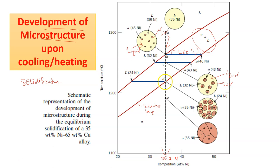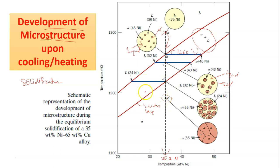The composition of the liquid phase at point D is found at the intersection of the tie line with the liquidus line. The composition of the liquid phase at point D is 24 weight percent nickel. Upon crossing the solidus line, point D cools further down to point E, where all the liquid will solidify.